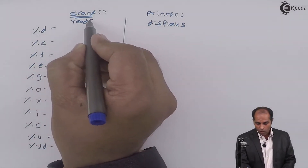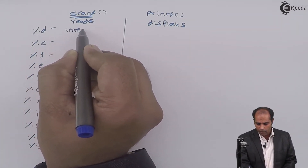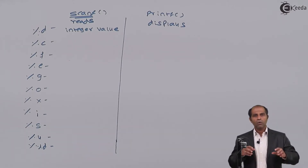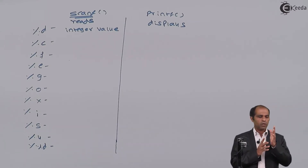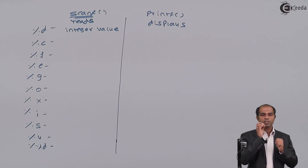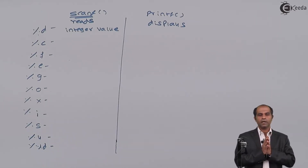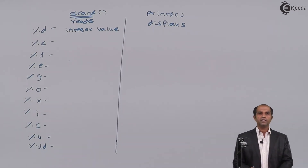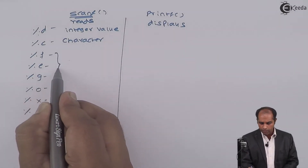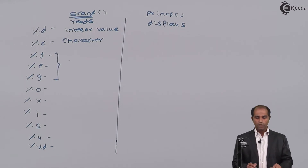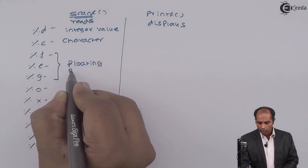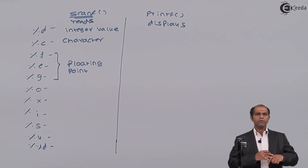When I say %d, it reads one integer value. We have three types of integer values: decimal, octal, and hexadecimal. Precisely, %d will always read a decimal integer value. %c is used to read a character value. %f, %e, and %g, when used with scanf, will all read a floating point or real value. You can use any one of these as an alternate of another with scanf.